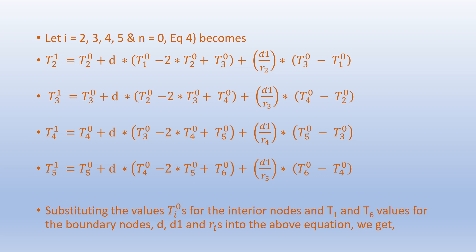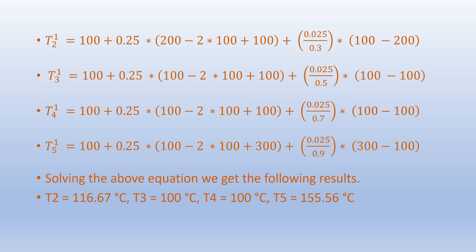Substituting the values T_i^0 for interior nodes, T1 and T6 for boundary nodes, and D, D1, and r_i values into the equation, we get the following results for the first time step: T2 = 116.67°C, T3 = 100°C, T4 = 100°C, T5 = 155.56°C.